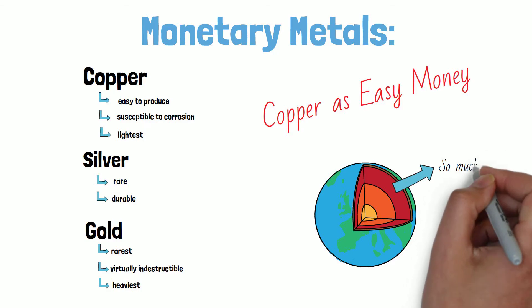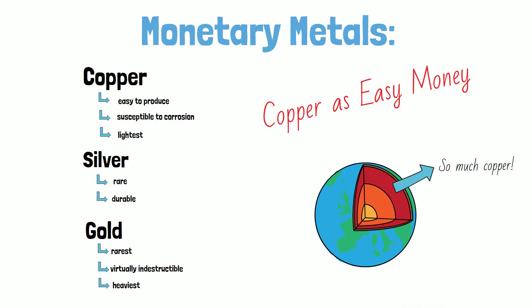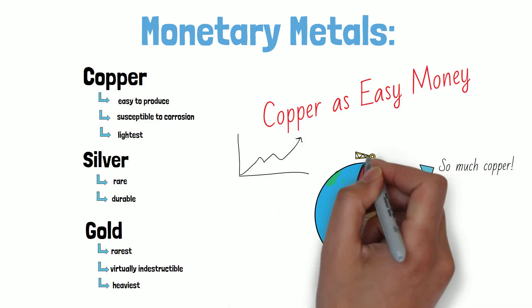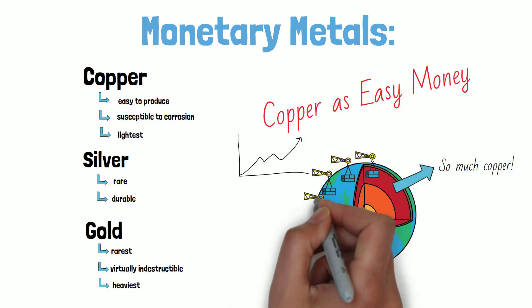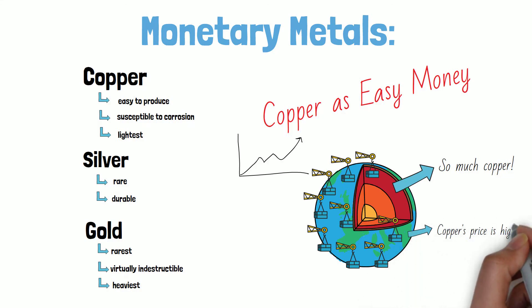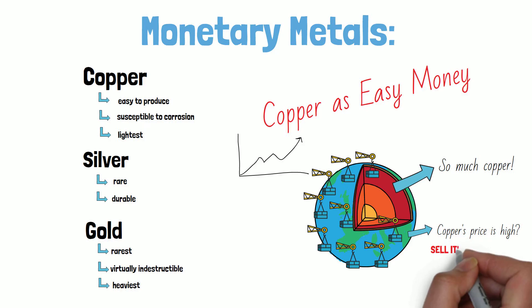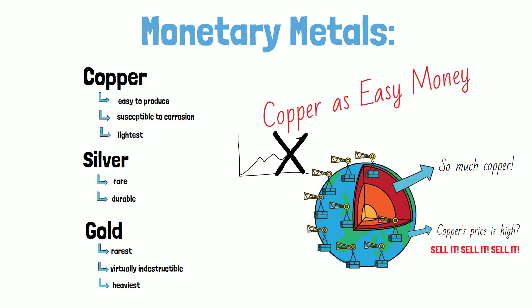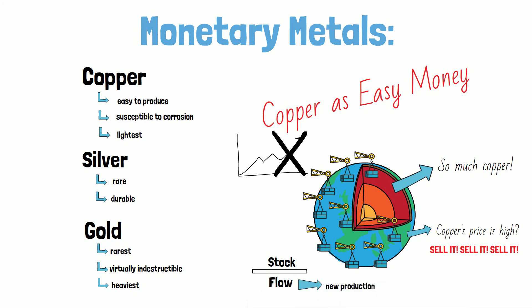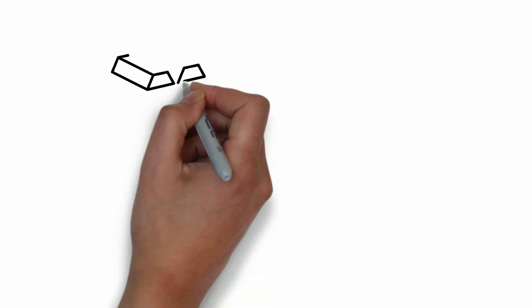There is so much copper in the earth and you can always mine more. If the price of copper is rising, producers will rush to mine more. But at some point, demand for copper at the higher price will subside and holders will want to offload to buy other goods. So everyone wants to sell and the price comes crashing back down. In other words, as revenue to producers increases, they invest in increasing production, which brings the price crashing down again. So of the monetary metals, gold is the hardest money.